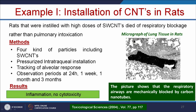Example one is instillation of CNTs in rats. Rats instilled with high doses of single-walled carbon nanotubes died due to respiratory blockage rather than pulmonary intoxication. They used four kinds of particles including single-walled carbon nanotubes, given by intratracheal instillation, and observed at 24 hours, 1 week, 1 month, and 3 months. The results showed inflammation but no cytotoxicity. The respiratory airways were mechanically blocked by carbon nanotubes, due to which the rat died.